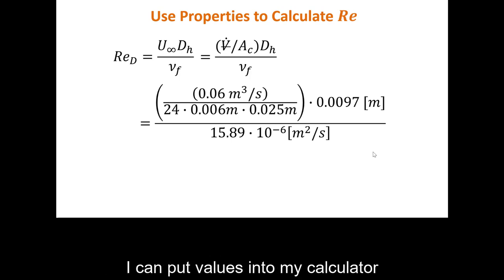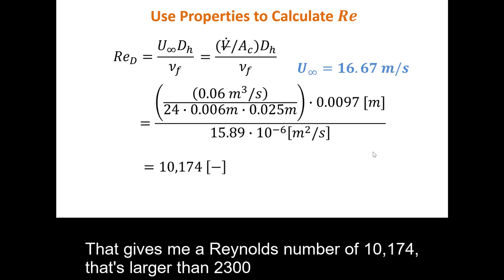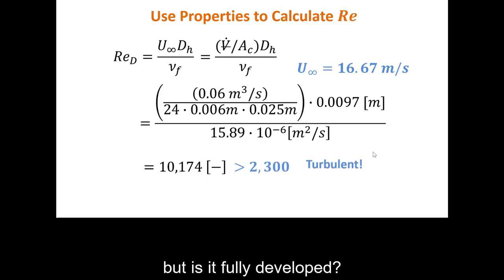I can put values into my calculator and find that the velocity of the flow in the heat sinks is 16.67 meters per second. That gives me a Reynolds number of 10,174. That's larger than 2,300, so my flow is turbulent.